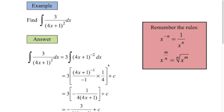One more example: we've got the integral of 3 over (4x plus 1) squared. First thing is you've got to bring that 4x plus 1 term to the top, so 4x plus 1 to the power of negative 2. The 3 is out the front of the integral sign. Applying the rule: add 1 to the power, divide by the new number, 4x plus 1 stays the same, times by 1 over 4. 4x plus 1 to the minus 1 means 4x plus 1 to the plus 1 on the bottom, the 4 is on the bottom line, and it's 3 times all of that, giving this answer here.